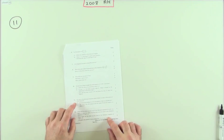Number 11 from the 2008 advanced higher, a proofs question. Two statements to prove or disprove. It can be quite tricky to prove things, but it's very easy to disprove them - one counterexample will do.